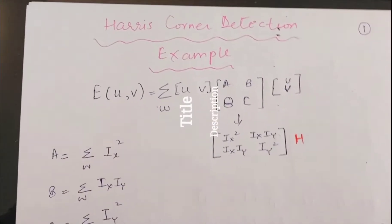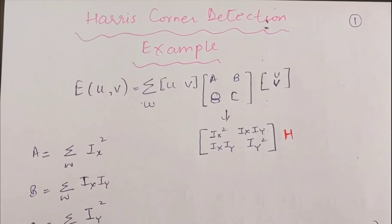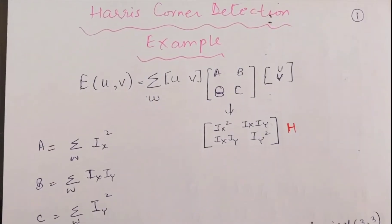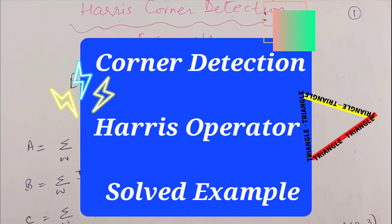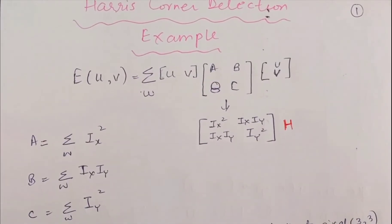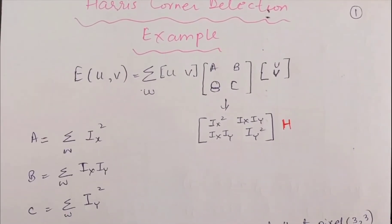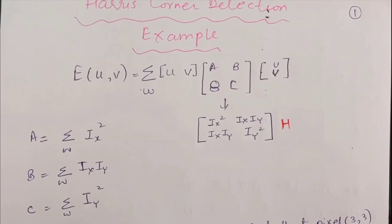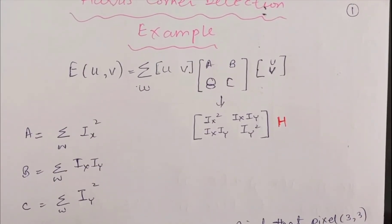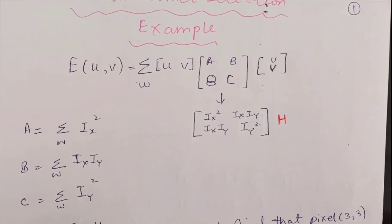Good morning everyone. In the last video, we understood the concept of Harris Corner Detector and we understood about eigenvalues and how we use lambda 1 and lambda 2 to determine whether a region is an edge, a corner, or a flat object.